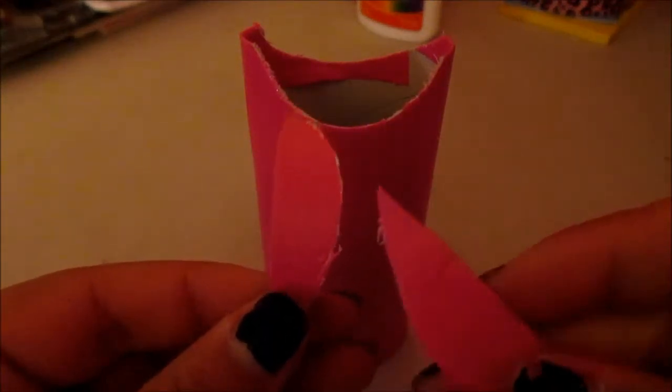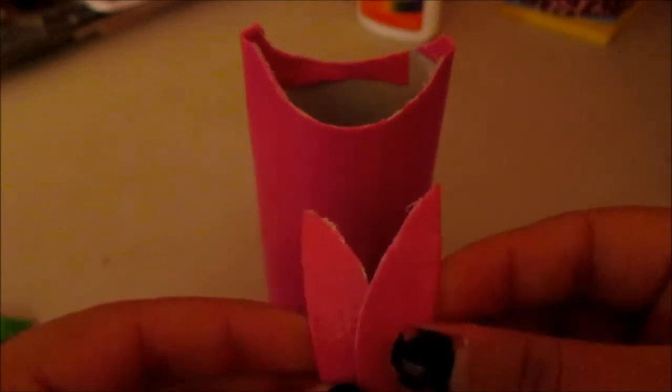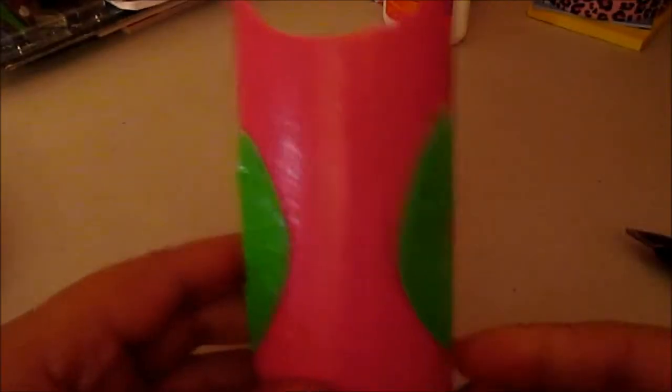But I chose to do other ones for the wings that are green. So now you use your hot glue gun to glue them on.